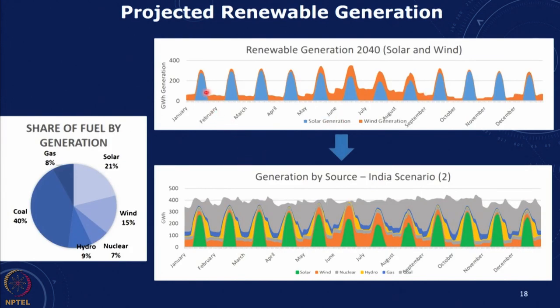This gives us the final renewable generation and generation by different sources. This kind of analysis helps us see that as we go beyond 35 to 40 percent generation from renewables, every additional megawatt hour of electricity generated from PV has to go through storage and then be used at some other time period. That will depend on the cost of storage — even with pumped hydro it adds another 5 to 6 rupees per kilowatt hour. That is one of the challenges when thinking of large-scale 100 percent renewable schedules.